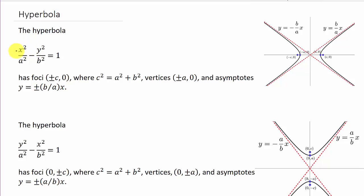So you can see when the X squared over A squared minus Y squared over B squared, the hyperbola opens left and right. And then you've got your asymptotes here, Y equals negative B over AX and Y equals B over AX.